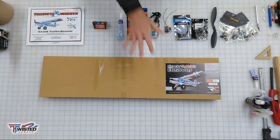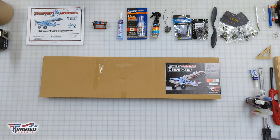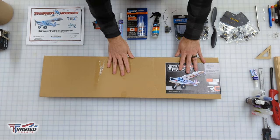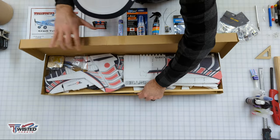First I got the plane itself and I printed out the manual. I also bought the full power combo, the receiver, some glue, and a prop balancer. Let's open it up and see what's inside.